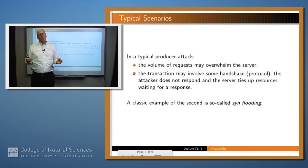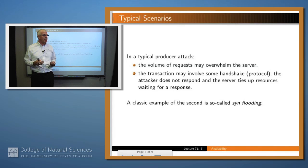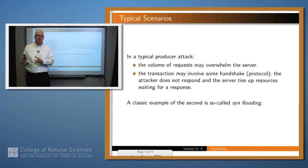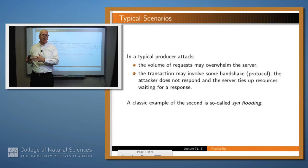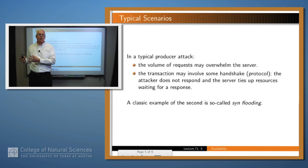We won't worry too much about the consumer attacks, but let's think about the producer attacks — how this typically happens. Usually, and this is often what's meant by a distributed denial-of-service attack, a number of computers might send illegitimate requests to the server and basically overwhelm its capabilities so that the server can't then respond to legitimate requests.